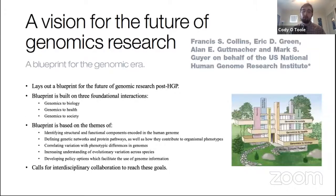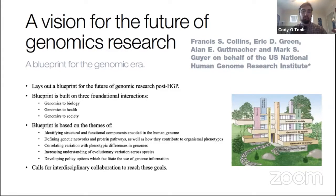Our first landmark paper is 'A Vision for the Future of Genomics Research' by Collins et al. in 2003. It lays out a blueprint for the future of genomics research built on three foundational interactions: genomics to biology, biology to health, then health to society. The blueprint is based on identifying structural and functional components encoded in the human genome, defining genetic networks and protein pathways as they contribute to organismal phenotypes, understanding how variation correlates with phenotypic differences across genomes, and understanding evolutionary variation based on phenotypic variation across species.